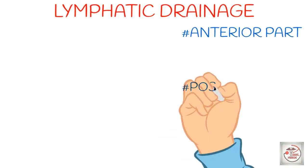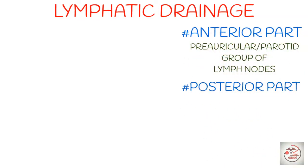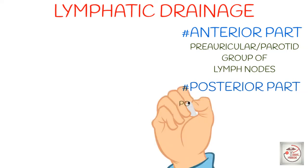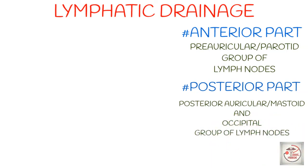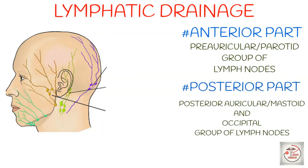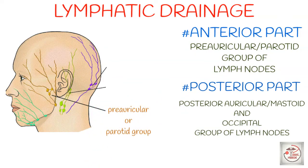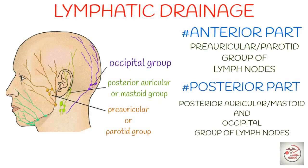Moving on to the lymphatic drainage of scalp. Scalp ka lymphatic drainage 2 parts mein divide hokar drain hota hai: anterior part and posterior part. Scalp ke anterior part se pura lymph, auricle ke aage situated pre-auricular ya parotid group of lymph nodes mein drain hota hai. Posterior part se pura lymph collect hokar 2 lymph nodes mein drain hota hai: posterior auricular or mastoid group, and occipital group of lymph nodes. In the image, brownish = pre-auricular/parotid nodes, light green = posterior auricular/mastoid nodes, purple = occipital nodes.